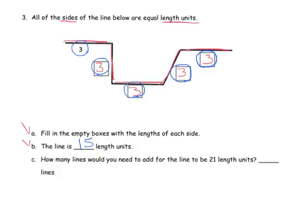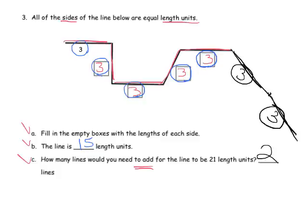And then the last question, how many lines would you need to add on for the line, the overall line, to be 21 length units? Well, so far we have 15, because we just counted them. So if we add another 3, that gives us 18. If we add another 3, starting from here, add another 3, that gives us 21. So we need to add 2 more lines in order to get up to 21.